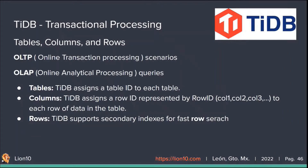Let's talk about tables, columns, and rows. In OLTP — Online Transaction Processing — scenarios, there are many operations such as adding, deleting, changing, and searching data on single or multiple rows. This requires the database to read a row of data quickly, so each key should have a unique ID, either explicit or implicit, to enable quick location. If you've worked with databases before, you'll notice a familiar pattern.